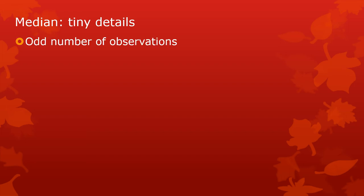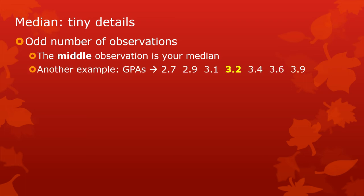If there's an odd number of observations, then the middle observation is the median. Its value is the median. So here's another example, GPAs. You have an odd number of observations. 3.2 is the middle one. These are ordered, and there are seven of them. So the fourth one, the one in the middle, is your number.